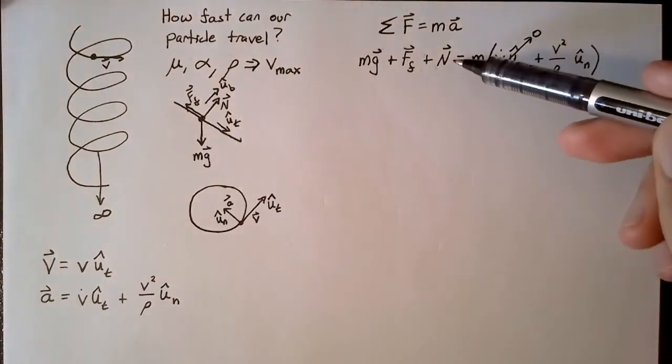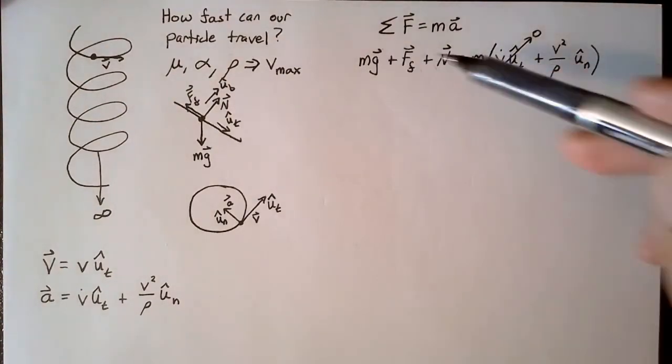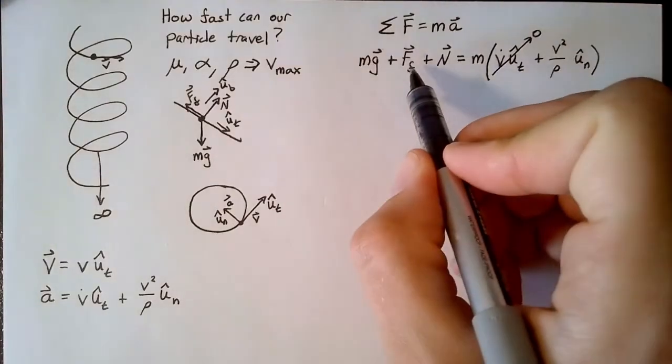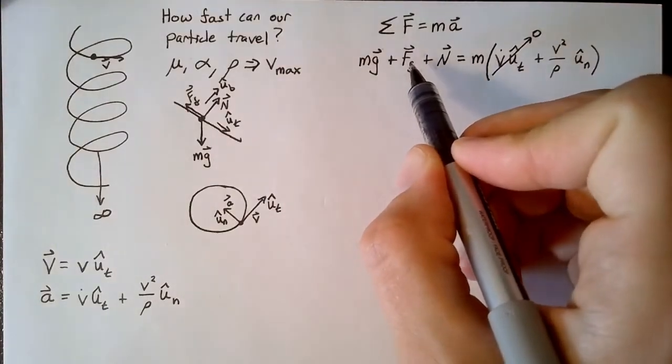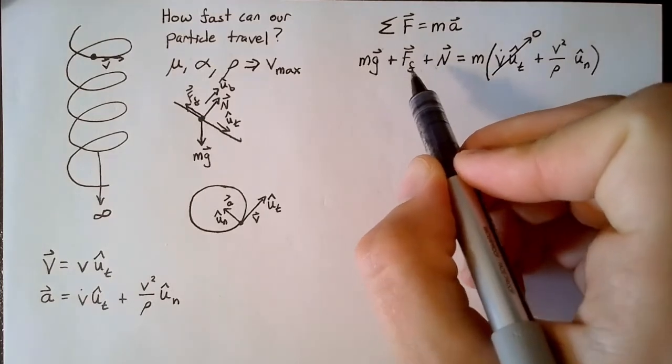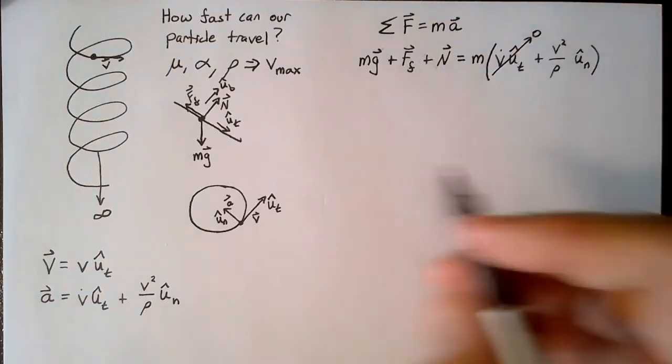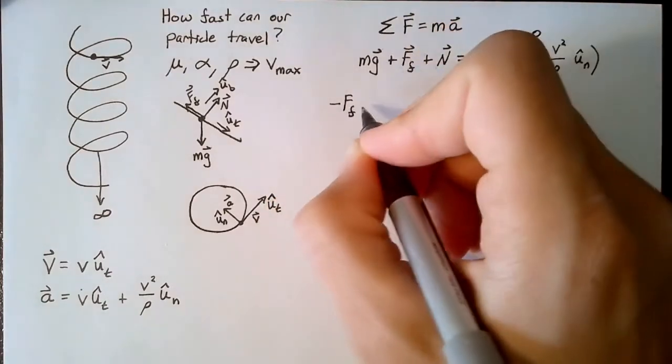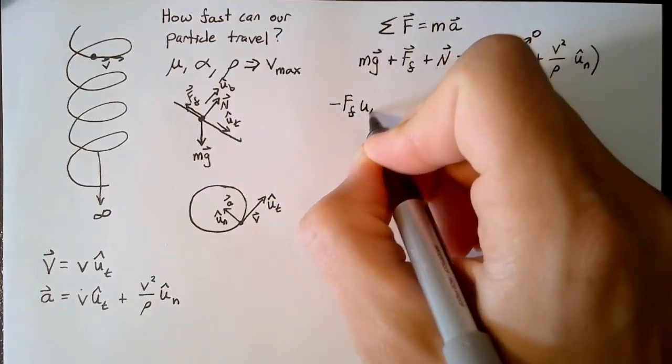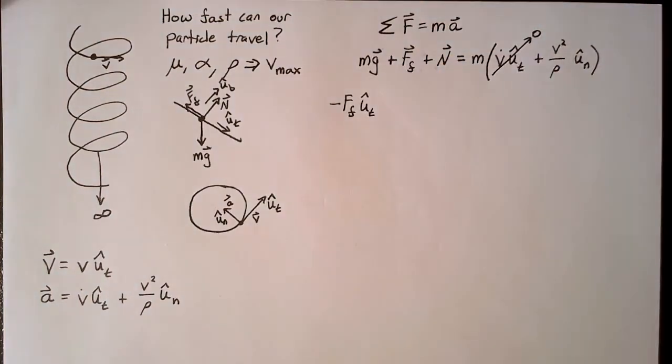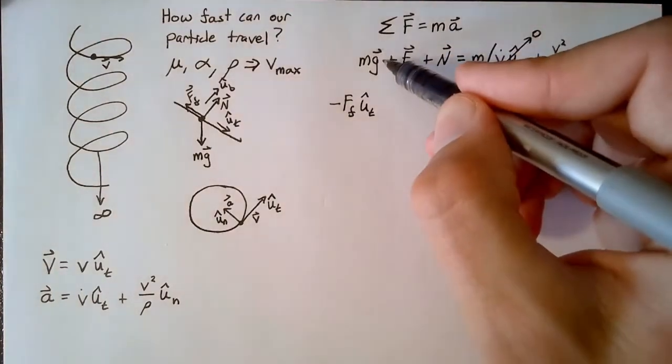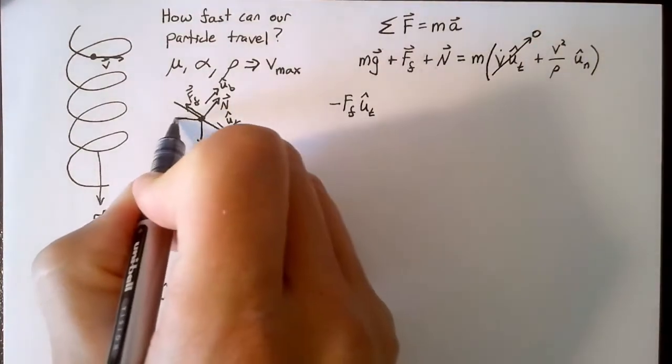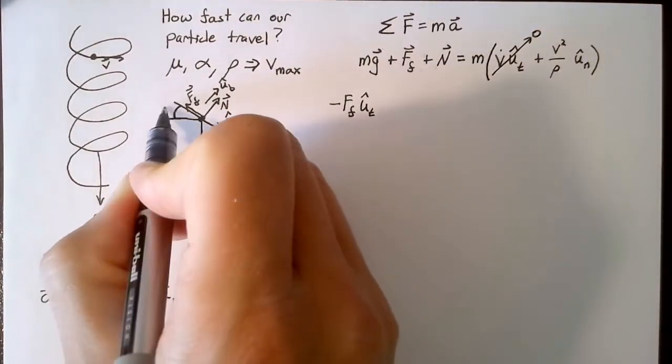The next step is splitting up these vectors into their components. The easiest is the friction term, because we know that goes in the opposite direction as velocity. So this is going to be the negative ut direction. I'll write this as negative f sub f without a vector sign, and say that it's in the ut direction. Next we can split up gravity fairly easily. And we do that by recognizing that this right here is alpha.